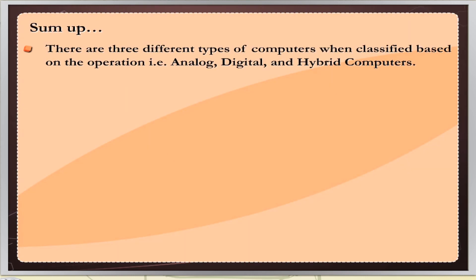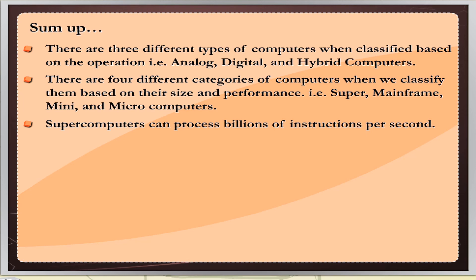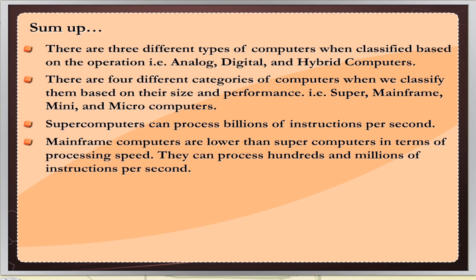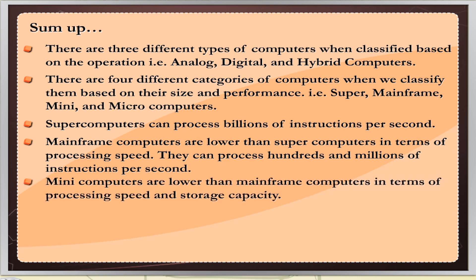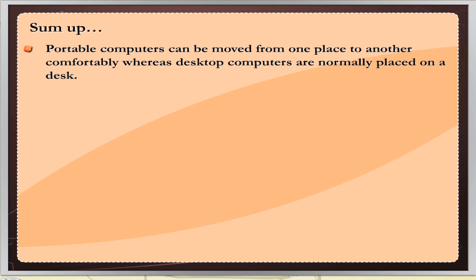Sum up: There are three different types of computers when classified based on operation: analog, digital, and hybrid. There are four categories when classified by size and performance: super, mainframe, mini, and microcomputers. Supercomputers can process billions of instructions per second. Mainframe computers can process hundreds of millions of instructions per second. Mini computers are lower than mainframe in processing speed and storage capacity. Microcomputer refers to a computer with a single microprocessor. Portable computers can be moved from place to place, whereas desktop computers are normally placed on a desk.